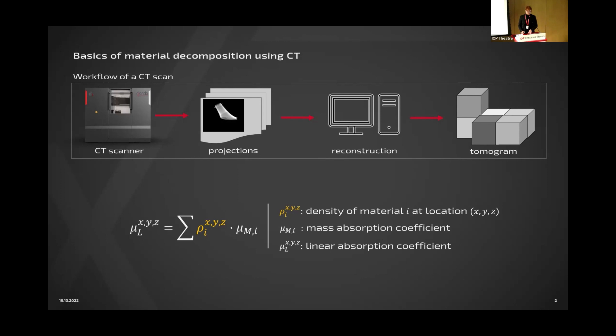Each voxel contains information of this linear absorption coefficient μ^(x,y,z), which consists of density ρ and mass attenuation coefficient μ_m. In case you have one material inside your workpiece and you know this μ_m and you measure μ_l, you directly get the density.